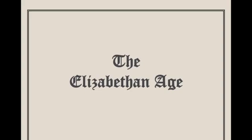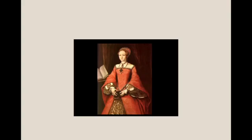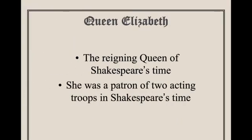Let's look more closely at William Shakespeare and his time period. We're going to start off with Queen Elizabeth — this is the Elizabethan age. She is the reigning queen of Shakespeare's time, though once she is gone in 1603 when King James comes in, we still see Shakespeare around. She was a patron of two acting troops in Shakespeare's time.